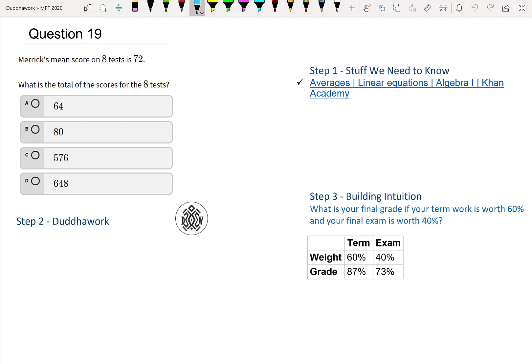The first step to solving any problem is to understand what's going on, right? You can watch this video here as a review of what it means to have an average. And really, what we have is that the average is just the total divided by the number of observations.